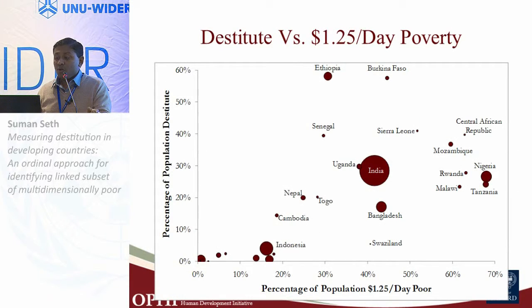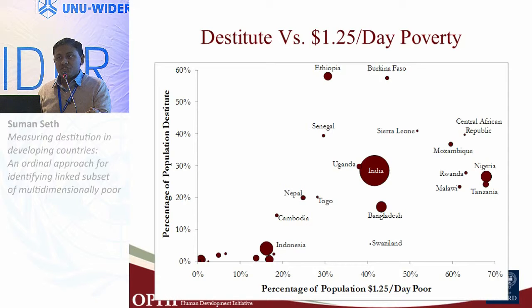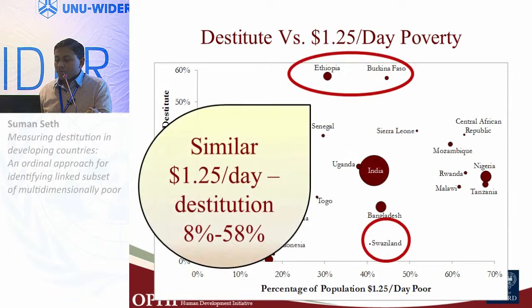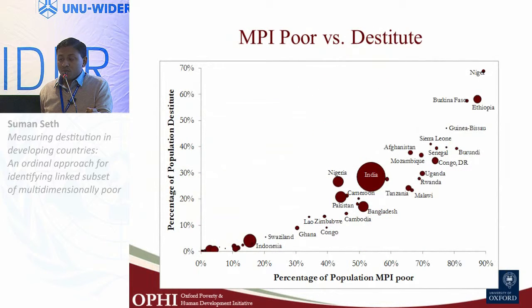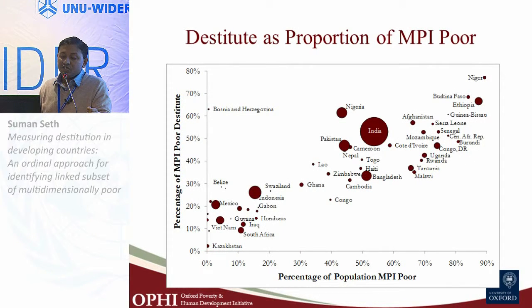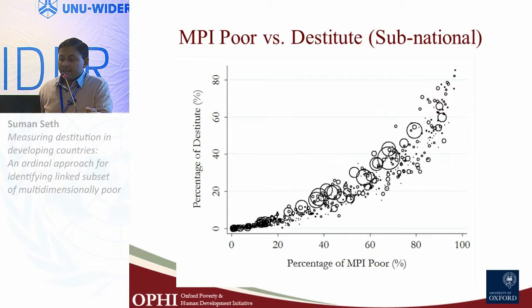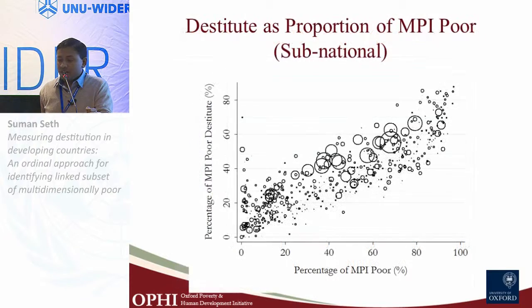We also plot the $1.25-a-day poverty rate against the destitution rate across countries. Although there appears to be a positive relationship, it is quite volatile — not a strong positive relationship. Similarly, plotting the percentage of the population that is destitute versus the percentage that is MPI poor shows a positive relationship, but with more volatility when we present the share of MPI poor who are destitute against the overall MPI poverty rate. We also examine sub-national regions and obtain similar results.